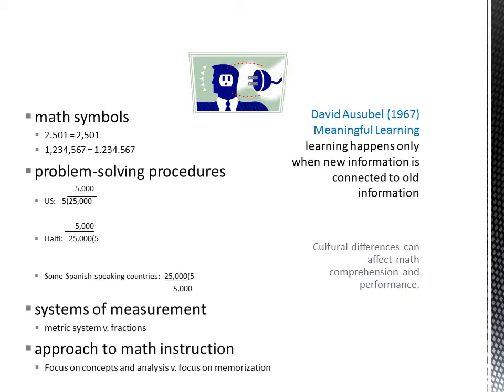In the 1960s, David Ausubel taught us that learning happens only when it is meaningful — only when new information can be connected to old information. Teachers can research or ask students about the ways they learn or have learned math. This is important when it comes to cultural differences that can affect math comprehension and performance. For example, there are differences in math symbols: to write decimals in the United States we use a point, but in Latin American cultures they use a comma. Similarly, we use commas to separate millions from thousands from hundreds, but in other cultures they use periods to signify the same concept.